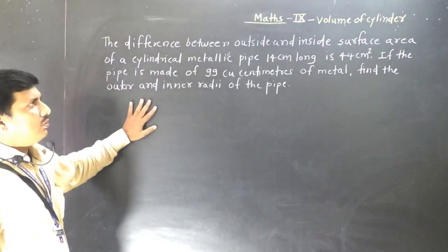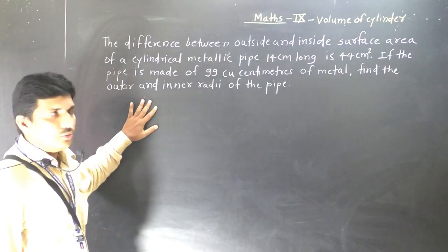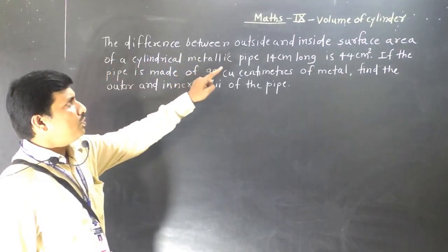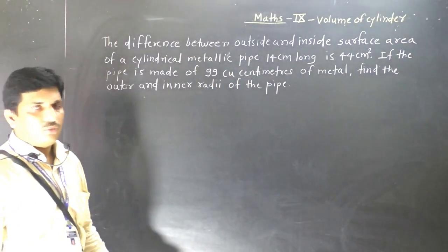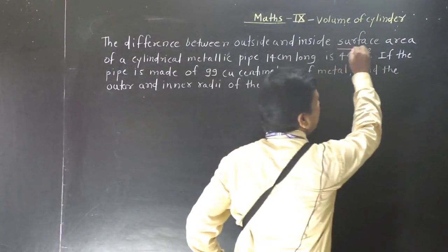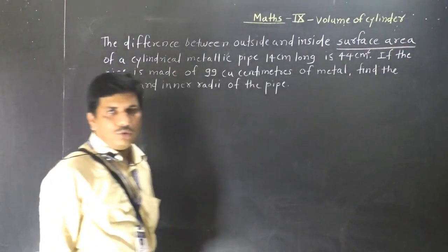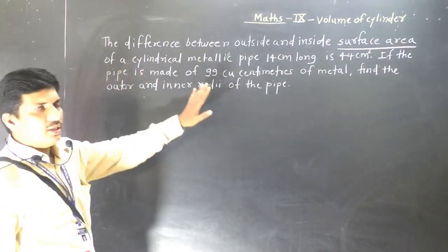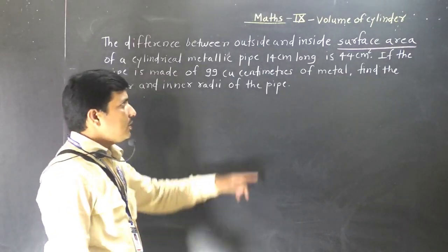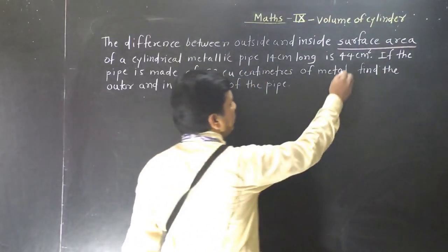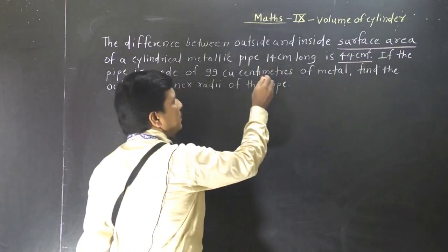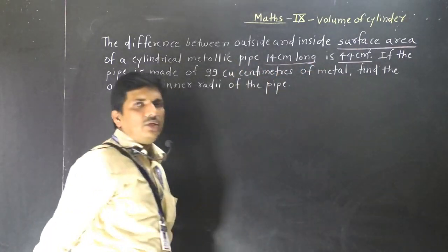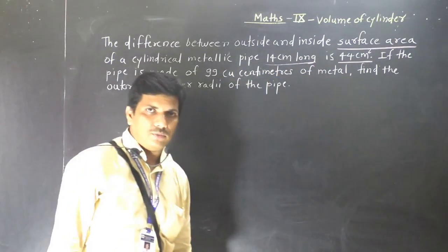So this is a hollow cylinder. What is given? The difference between outside and inside surface area — here we have to consider total surface area. The difference between total outside and inside surface area is 44 cm square. The metal pipe is 14 cm long, and 'long' here means the height of the cylinder.